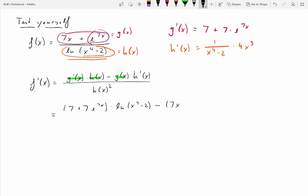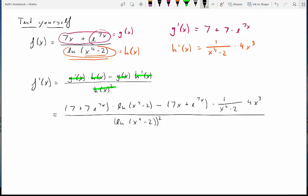Now we need minus g of x. g of x is, of course, just 7x plus e to the 7x. And finally, to complete the numerator, we need h prime of x. And we calculated that to be 1 over x to the 4 minus 2 times 4 times x to the 3. And the whole thing is divided by h of x squared. So we'll just copy h of x, which is the log of x to the 4 minus 2, and we square the whole thing. So I hope you realize that applying the quotient rule, once you remember the quotient rule, is really not too difficult. All you need to be able to do is calculate the derivatives of the individual parts.